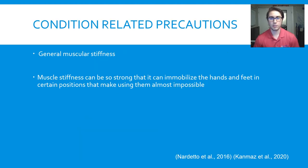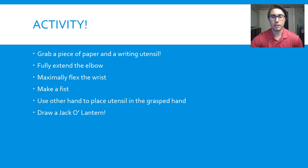Condition-related precautions for Isaac's syndrome: precautions will include fall management due to general muscular stiffness that prohibits balance control as well as muscle soreness. Muscle stiffness can get so powerful that upper and lower extremities can be so contracted that they are actually unusable. This means we will have to focus more on ADLs such as bathing, feeding, and donning. To demonstrate what these people go through in their daily lives, we will be doing an activity where we will contract the arm into an uncomfortable position and try to draw a jack-o-lantern.